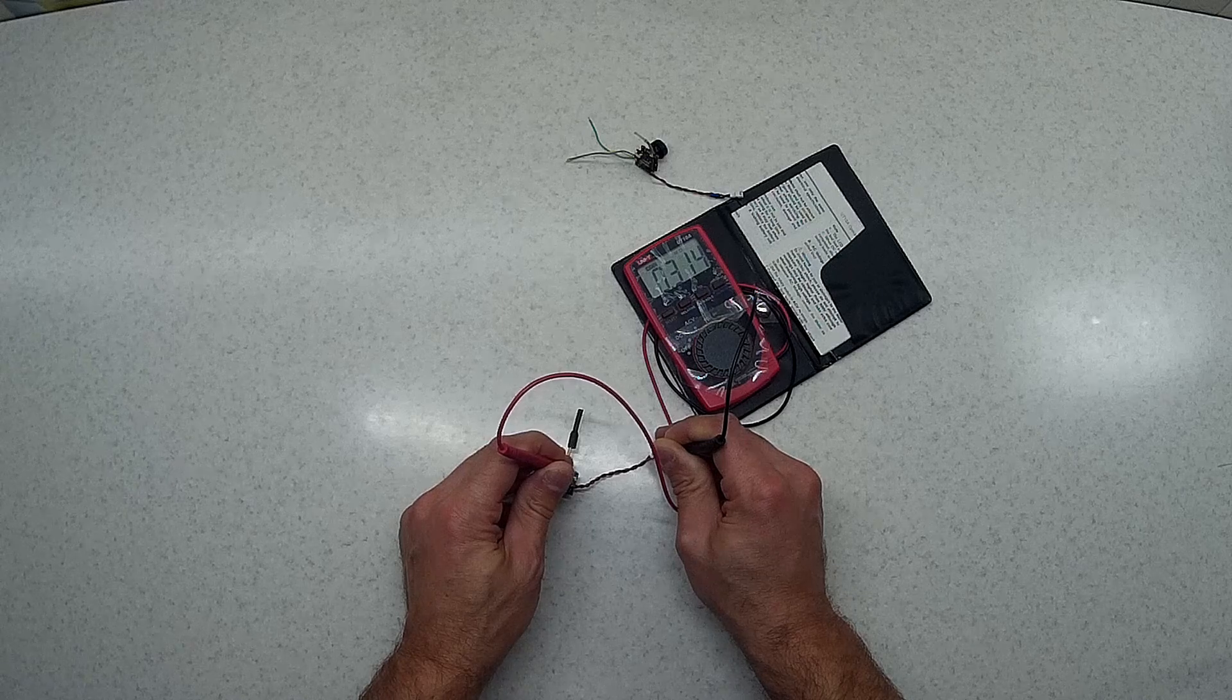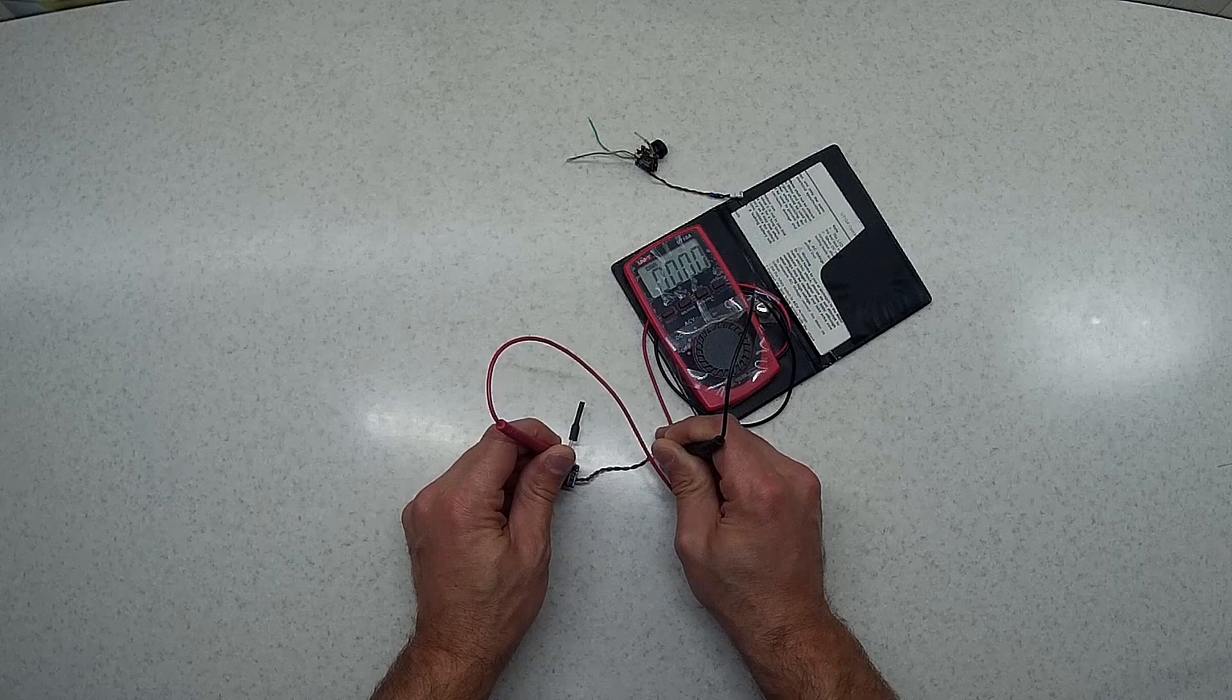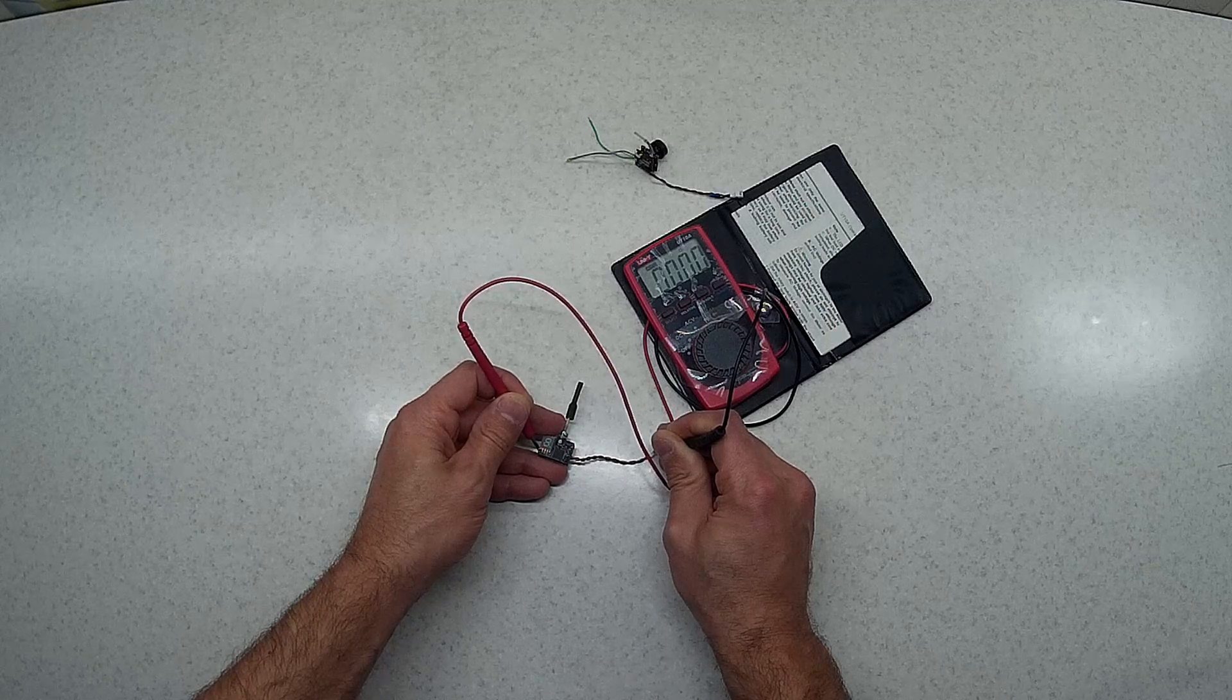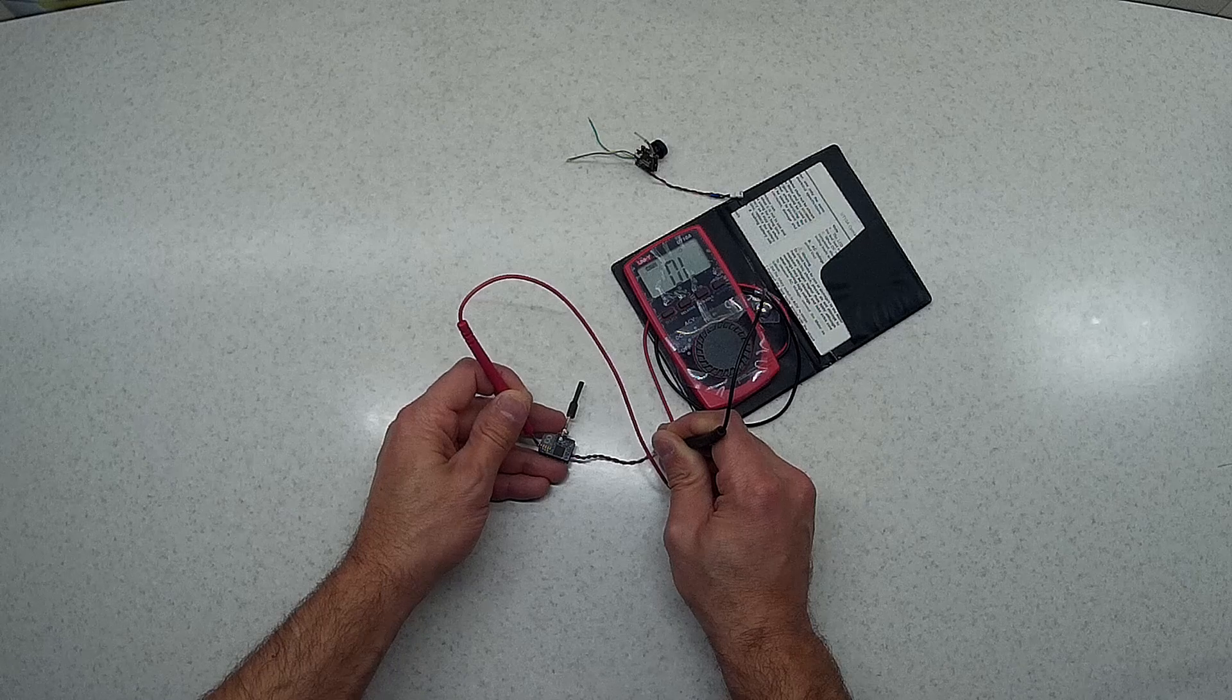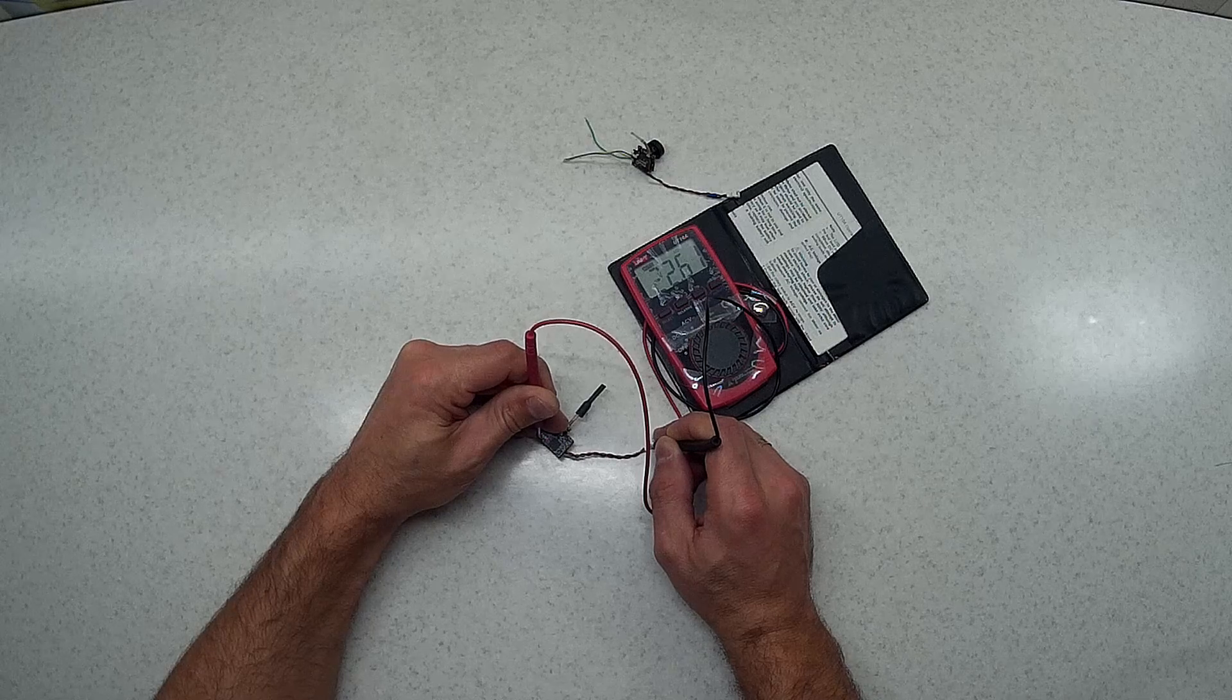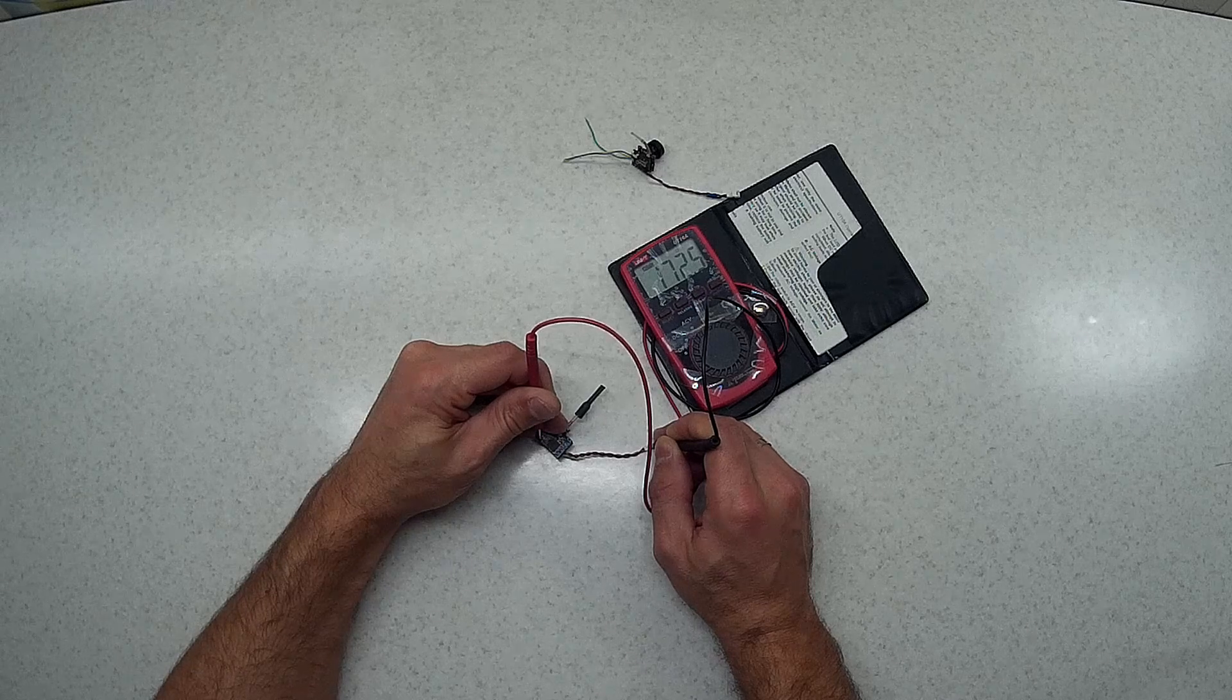So first pin is about kilo ohms, so it's not it. The second one is the ground itself because we have about zero ohms. Third is 20 ohms. The other one again ground because we have zero ohms. Next one is about 20 kilo ohms and the last one is 172 ohms.